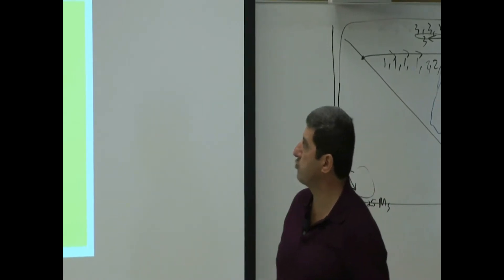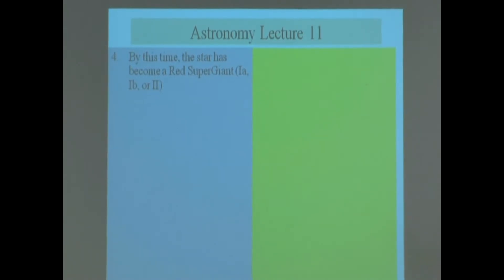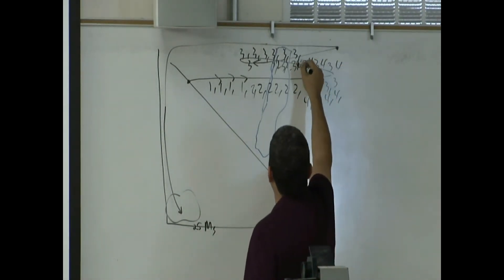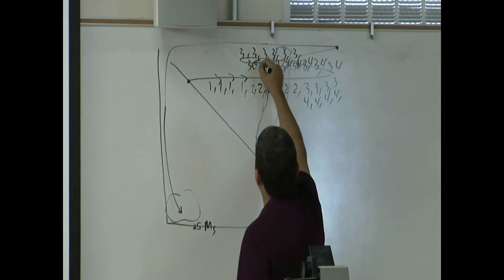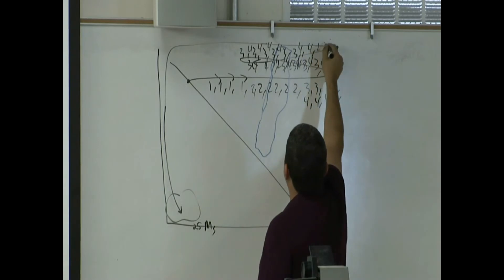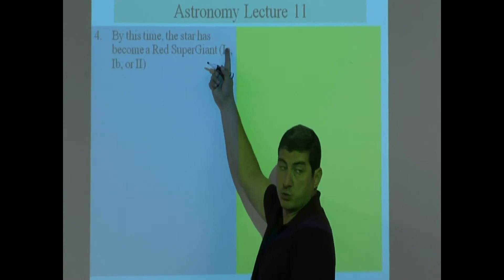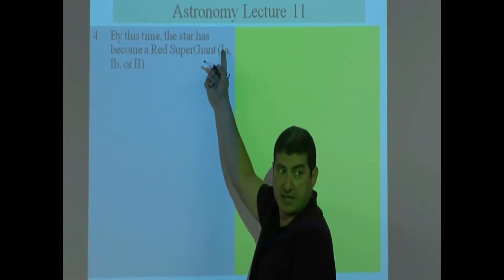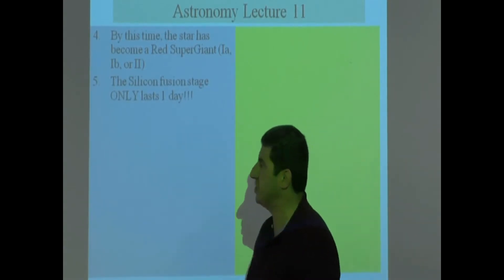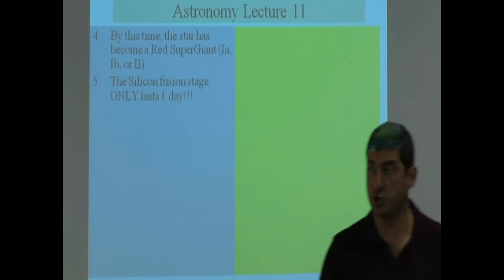By this time, the star has become a red supergiant — type 1a, 1b, or Roman numeral 2. So step 4 is also happening all along. By the time it goes way over to that corner, it's become the super, super large — the biggest and baddest. The silicon fusion stage only lasts 1 day. Remember that chart? So that means step 5 happens right before that corner.